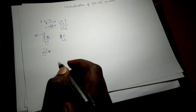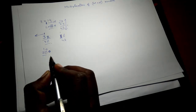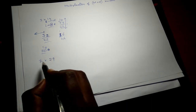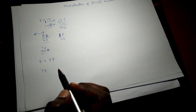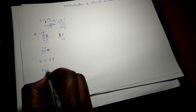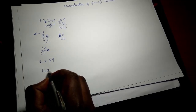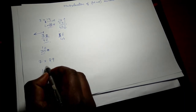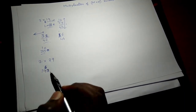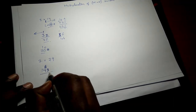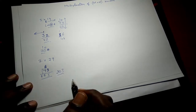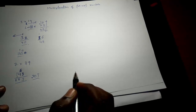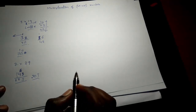Let me take another example: 7 into 29. That is 7×2=14, and 7×9=63. We write 63 so that 3 comes right next to the first result and 6 goes right above the 4. Adding up: 3, 10, and 203. So 7 into 29 is 203, which is the correct answer.